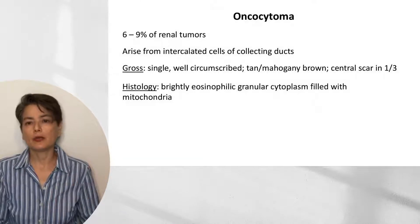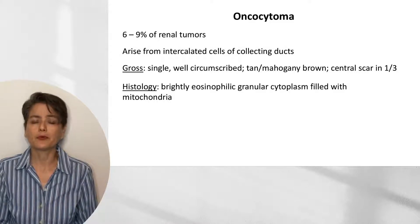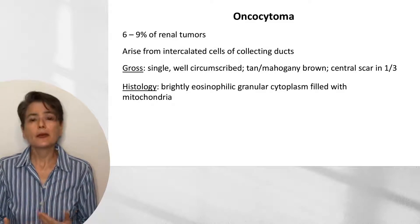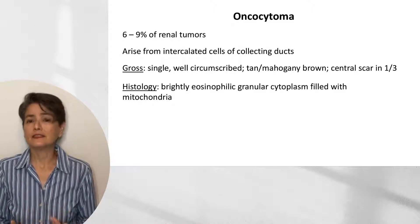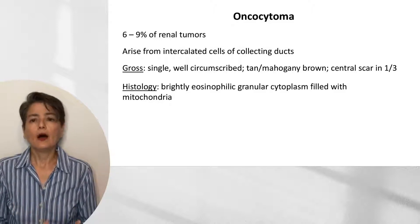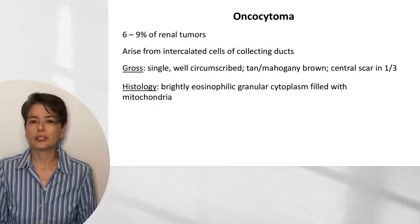Let's begin with oncocytoma, a relatively rare benign tumor representing about 6–9% or 3–7% of renal tumors depending on the series. It's important to know it exists because as we do more imaging studies, we're discovering these incidental renal tumors. Not every kidney mass is malignant. Oncocytomas are thought to arise from the intercalated cells of the collecting ducts.